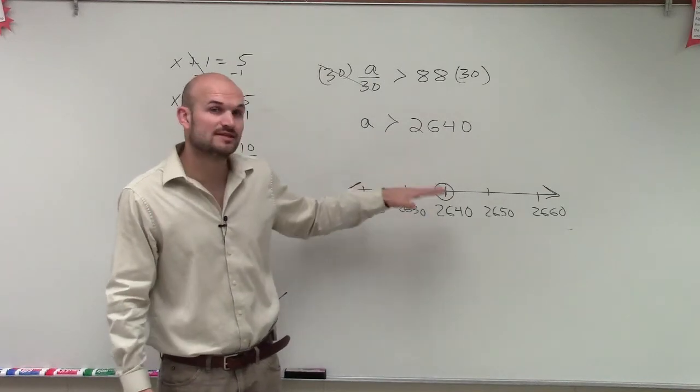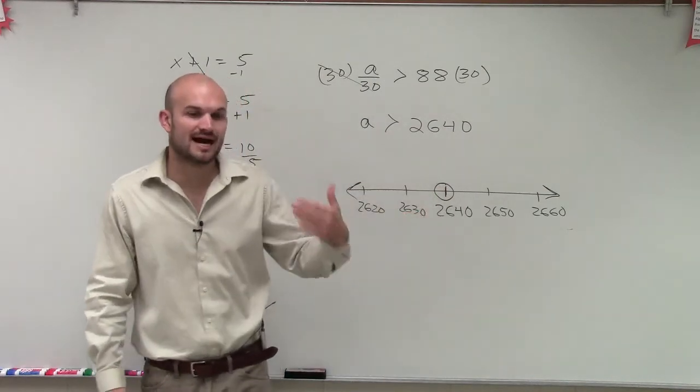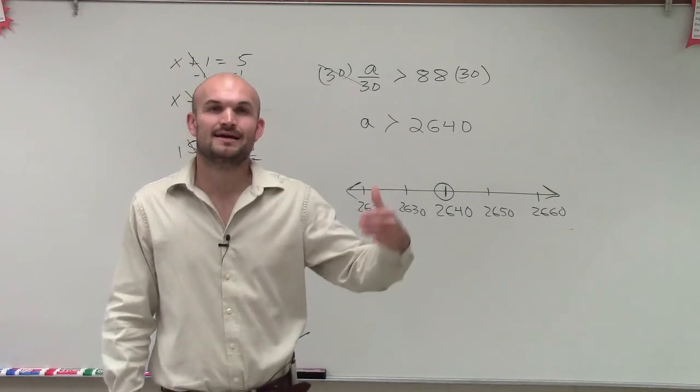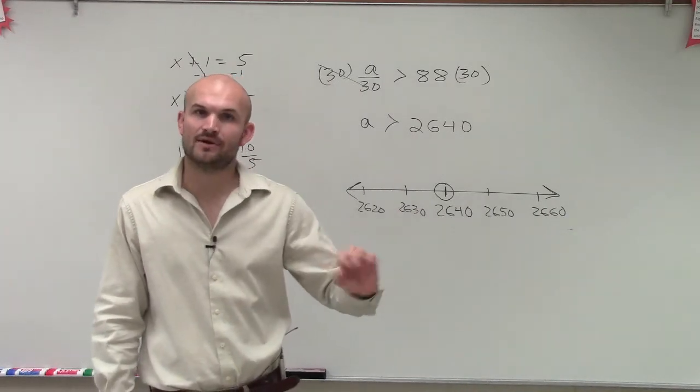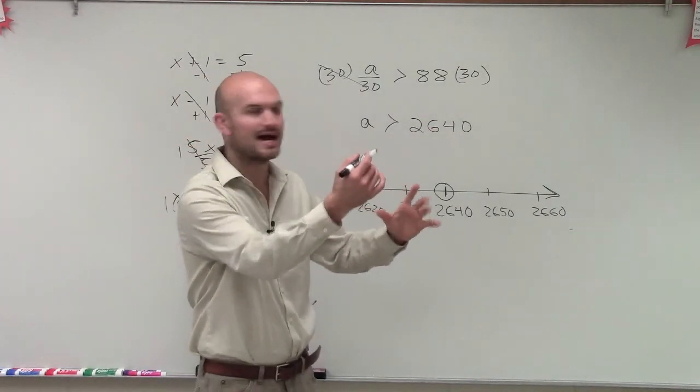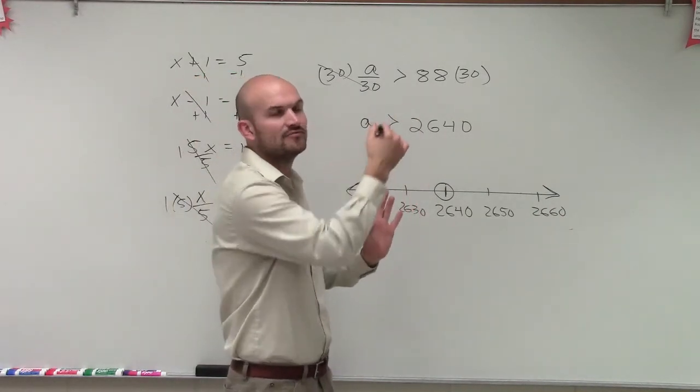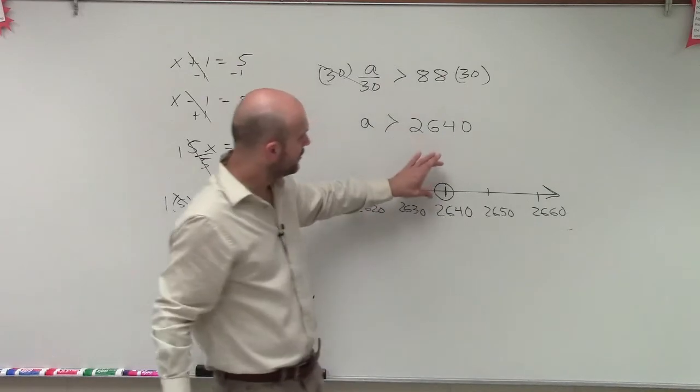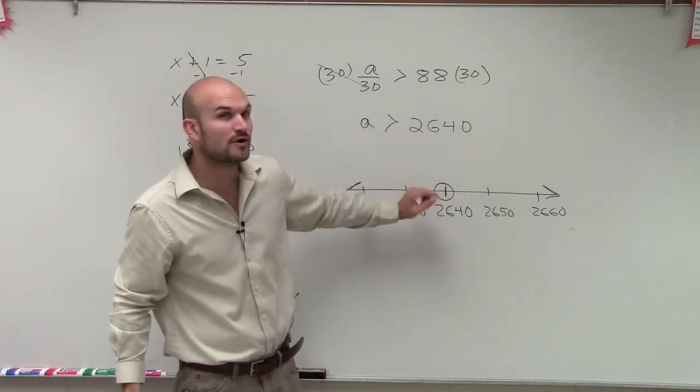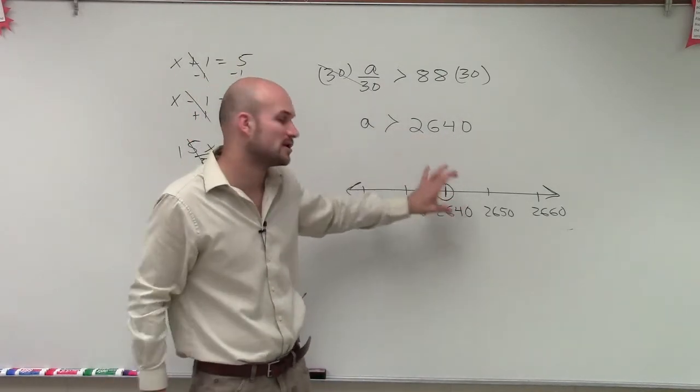So since it's not a solution of this inequality, I'm not going to shade it in. Because on a line graph, we represent a point by shading it in. We represent a point by making a nice little dot. Like when we graph something, a line or a parabola or anything is a set of points that we put on there. Well, we're going to start at 2,640, but I'm not going to shade this in because it's not a part of the solution.